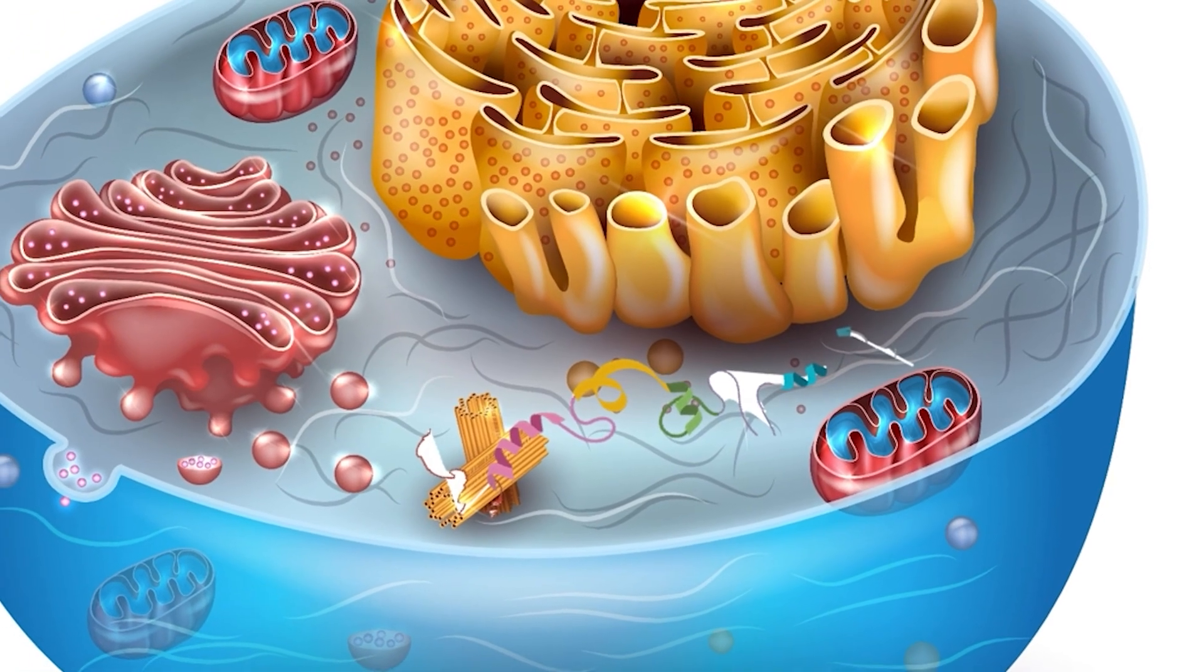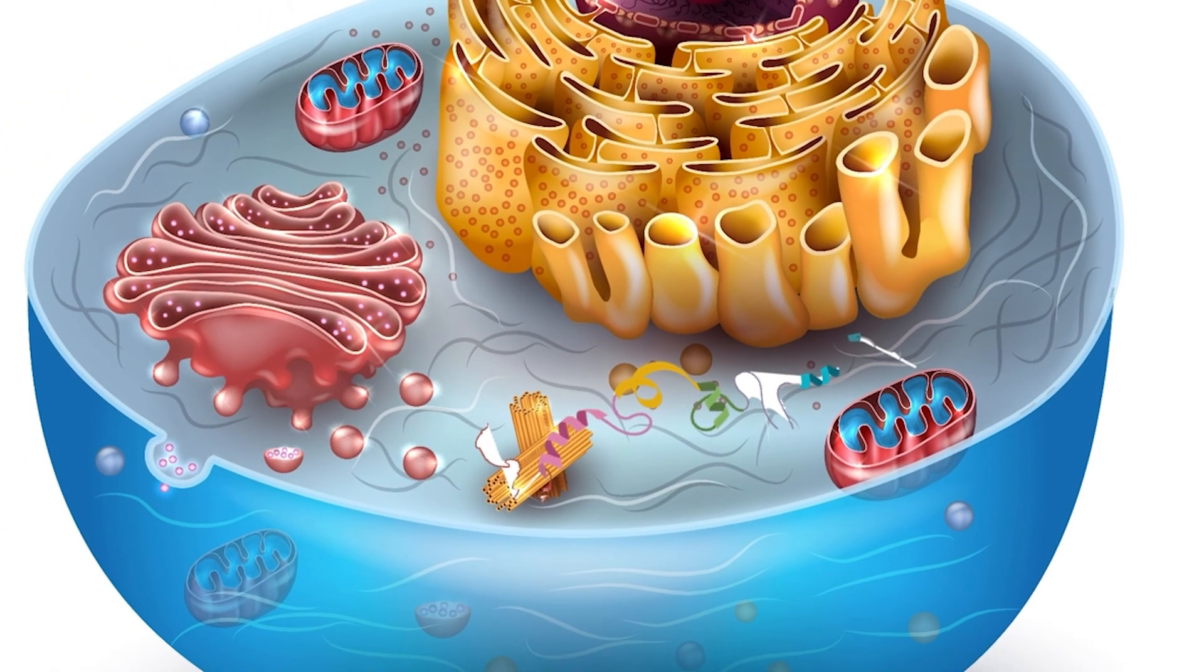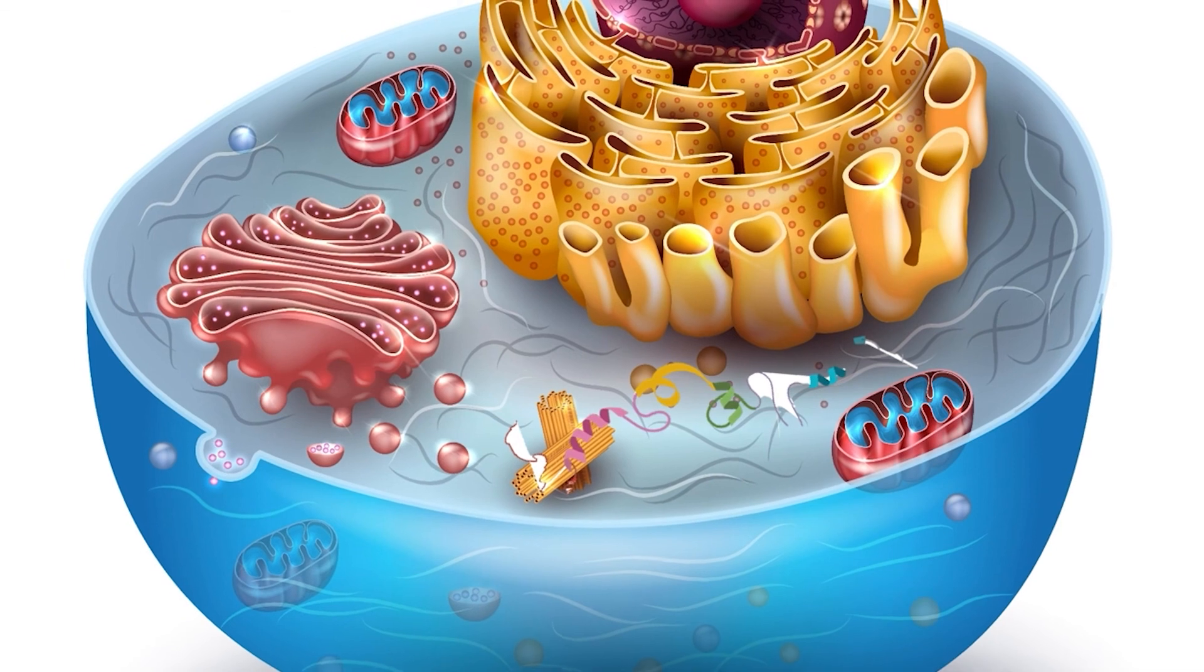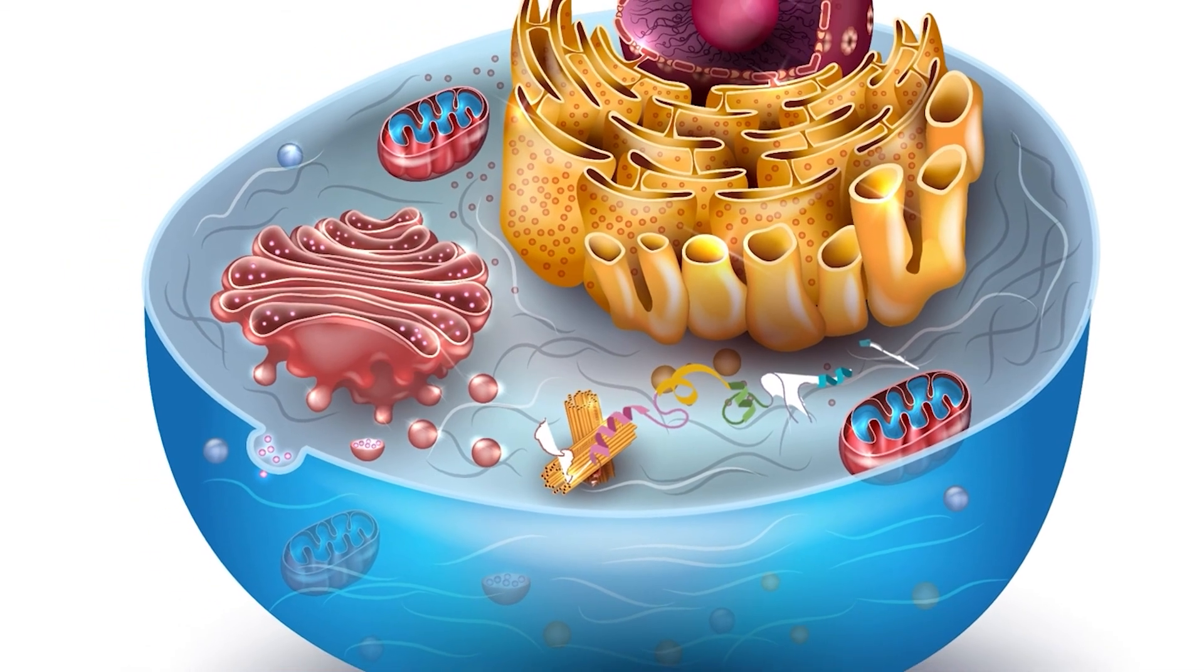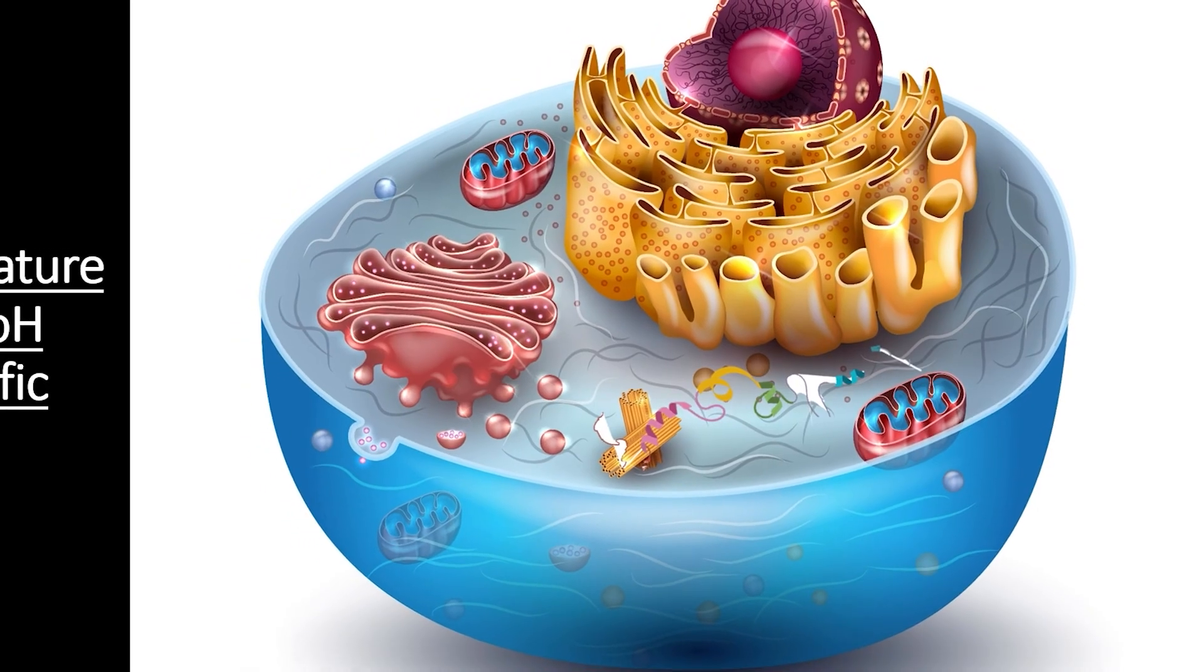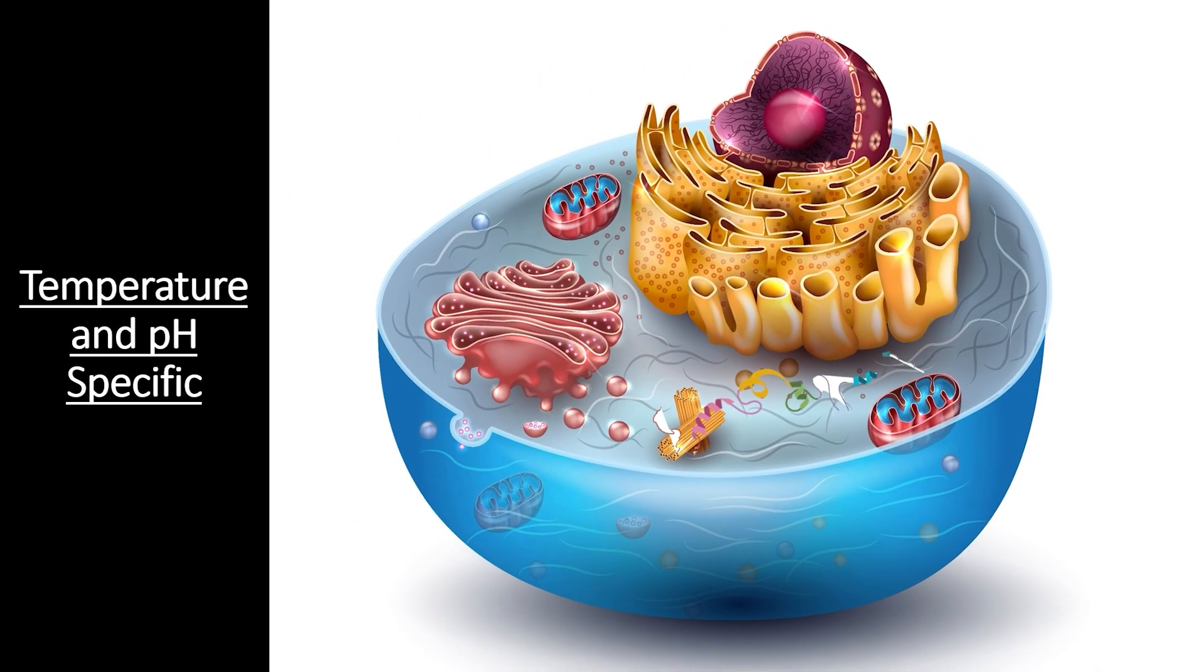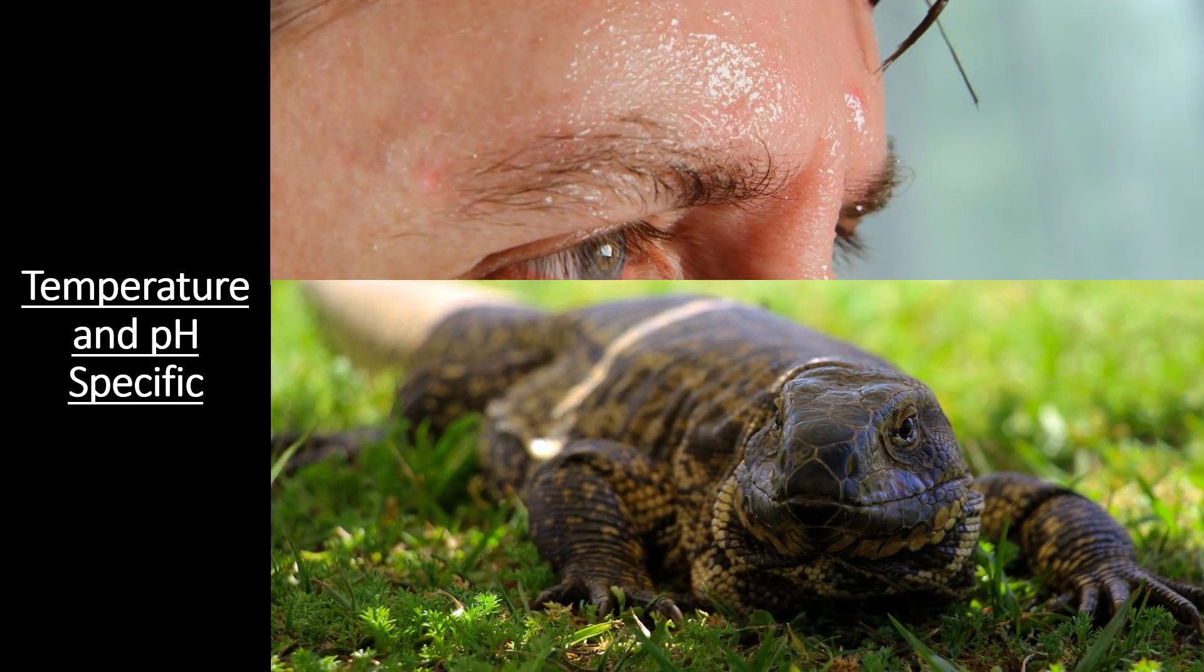Second, it means that cells and organisms must expend energy to regulate their temperature and pH in order to keep their enzymes functional. This is why cells have a number of integral membrane proteins that are constantly regulating the flow of ions and substances into and out of different compartments. Plus, almost all organisms have behavioral and physiological mechanisms that help regulate their temperature in changing environments, such as sweating or finding a shady spot when the temperature gets too high.